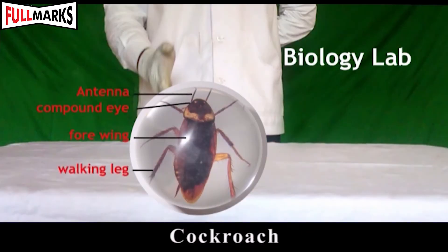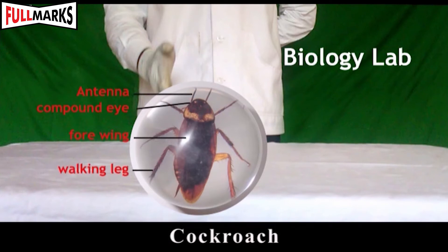Two: Cockroach. It has jointed appendages, hence it belongs to phylum Arthropoda — the phylum with the largest group of animals. Features of phylum: it possesses jointed legs; the exoskeleton is made up of chitin; they have compound eyes with mosaic vision; the body is bilaterally symmetrical and divided into three parts: head, thorax, and abdomen.